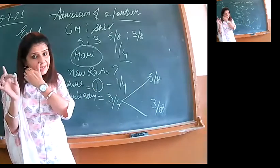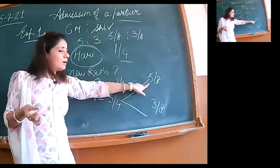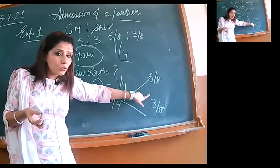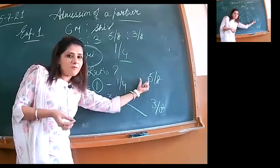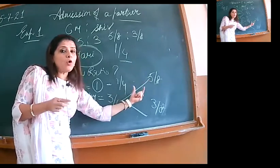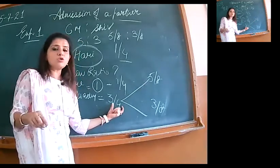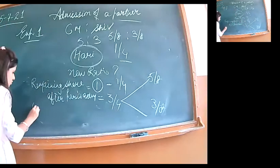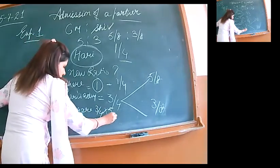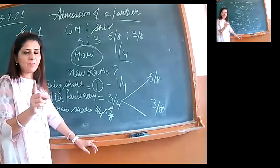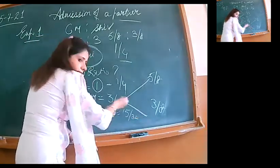Whatever is remaining, old partners will divide in their old ratio. Question is silent, so I am assuming whatever is remaining, old partners will divide in their old ratio only. Three by four of five by eight. Five by eight of three by eight. When 'of' comes in math, we multiply. So Om's new share equals multiply: three by four into five by eight. Never cancel, even if you can, don't cancel. We will simply multiply, numerator into numerator, denominator into denominator. Fifteen by thirty-two. Shiv's new share: three by four into three by eight, nine by thirty-two.